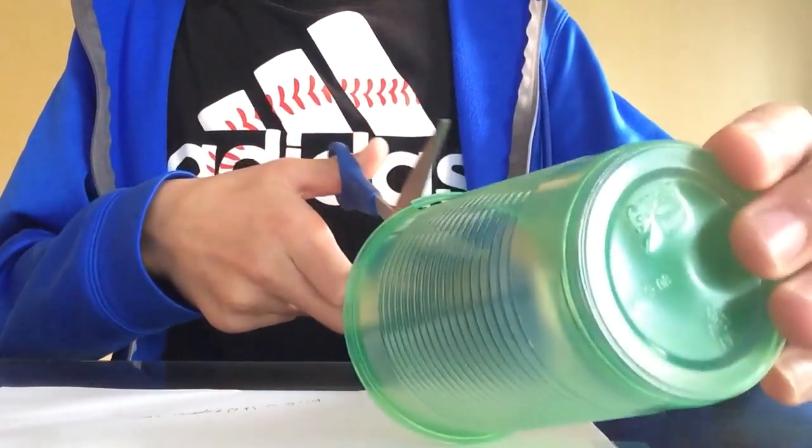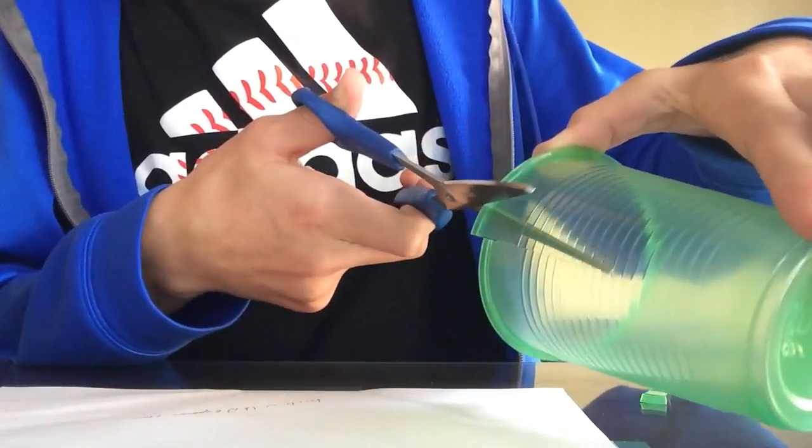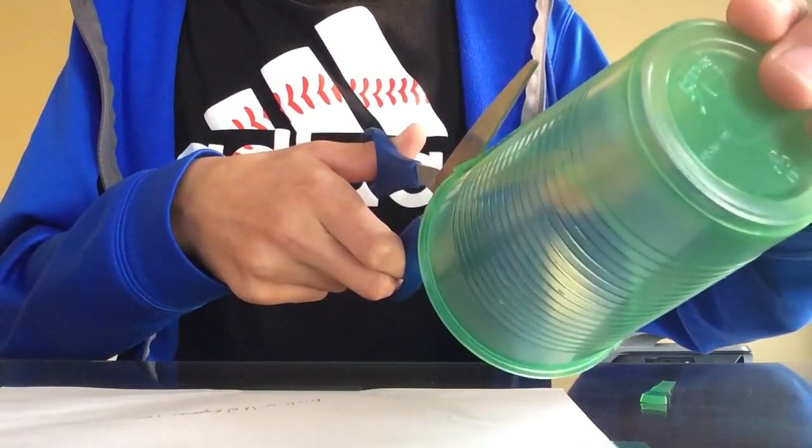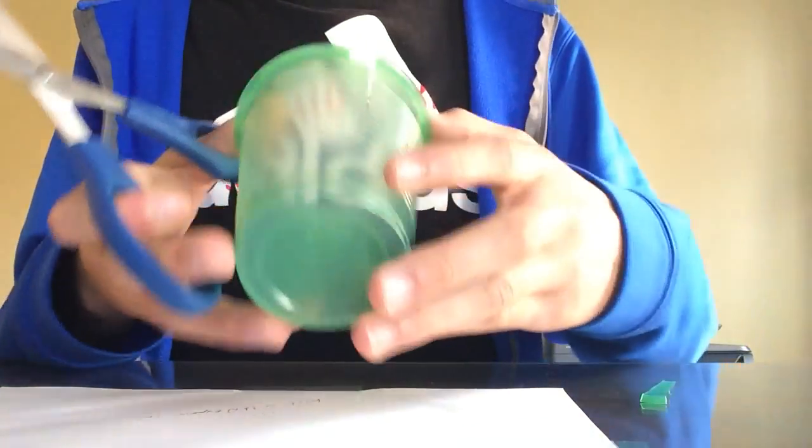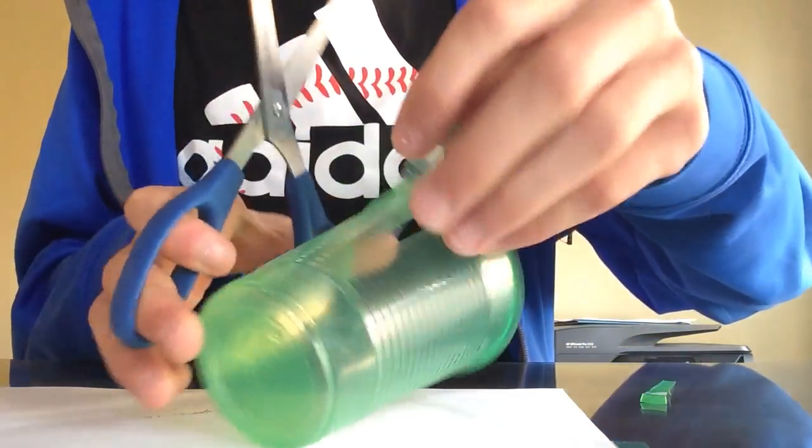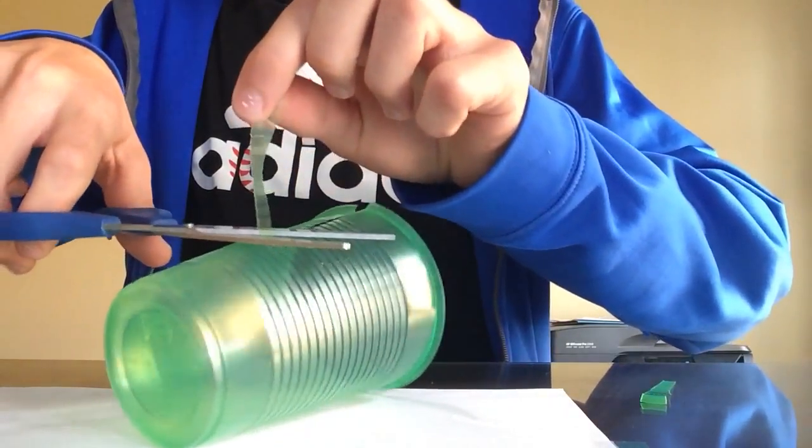Then what you want to do is cut down the cup again until you get it even like this. Then you pull the tab off and cut that side.